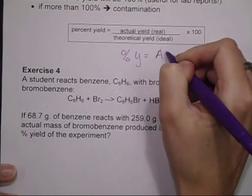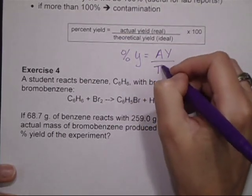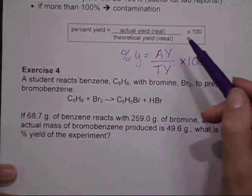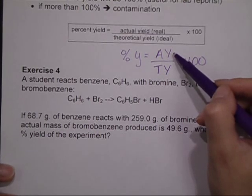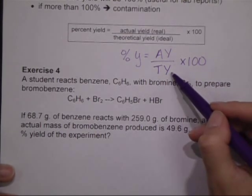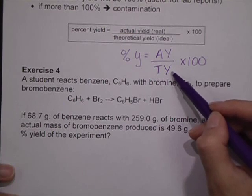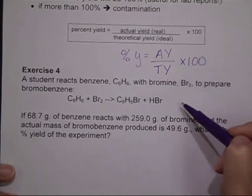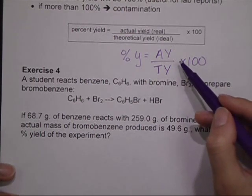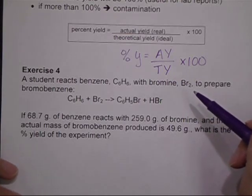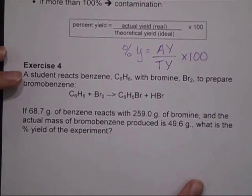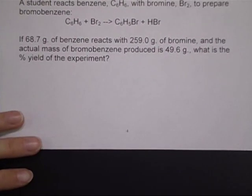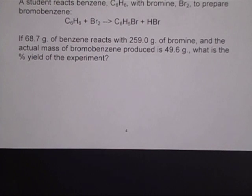You also need to understand the idea of the actual yield. The actual yield would either be a value given to you in the problem, or it would be for instance the mass that you got of your substance at the end of your reaction. It's the value that you got in lab. Most important is the equation itself. Percent yield equals the actual yield divided by the theoretical yield times 100. So that actual is what it gives you in the problem or you got in the lab. Theoretical is what you calculated using stoichiometry. Smaller number divided by larger number times 100.